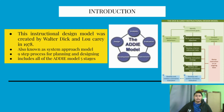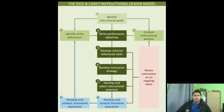This model is also known as the System Approach Model, where it involves a 9-step process for planning and designing. The 9 steps also include all of the ADDIE model's 5 stages, but give further depth and structure than the ADDIE model, because the Dick and Carey Model focuses more on the interdependence among the elements in the designing process. Now let's look at what the 9 steps are.